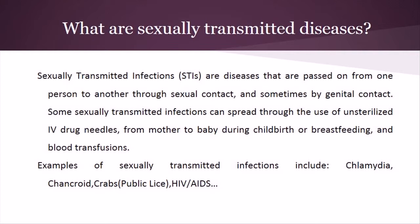Sexually Transmitted Infections are diseases that are passed on from one person to another through sexual contact, and sometimes by genital contact. Some sexually transmitted infections can spread through the use of unsterilised IV drug needles, from mother to baby during childbirth or breastfeeding, and blood transfusions.